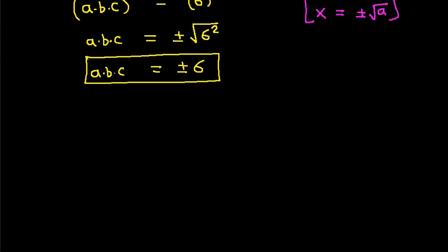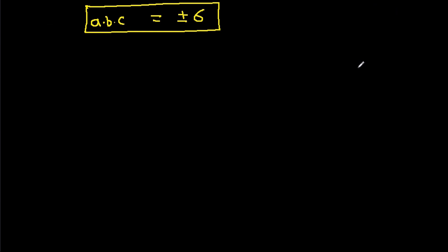And now, we have given that AB is 2, BC is 6, and CA is 3. So A, it will be ABC divided by BC, and it will be plus or minus 6 divided by 6, that will be plus or minus 1.